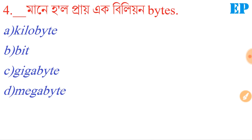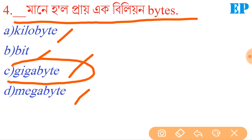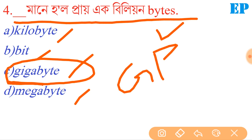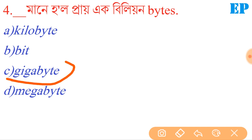The next question: how many kilobytes, megabytes, or gigabytes are in a billion bytes? One gigabyte equals one billion bytes. So 1 GB, 2 GB, 3 GB, 4 GB — the unit is gigabyte. 1 GB is equal to 1 billion bytes. The right answer is gigabyte.